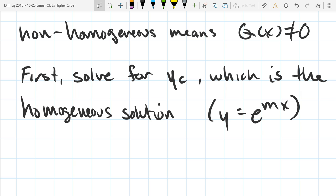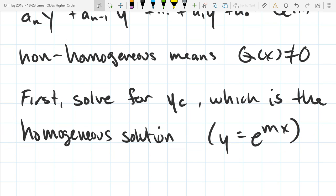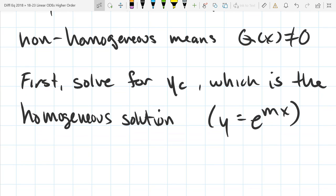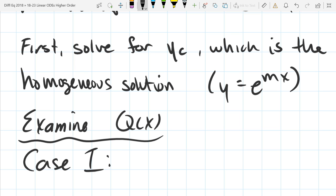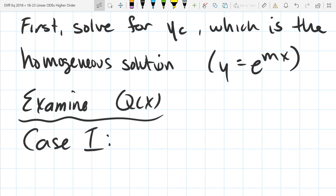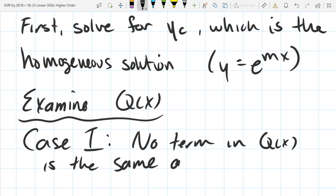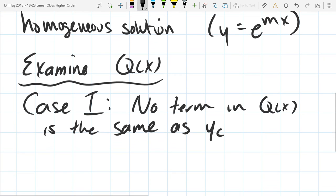Now we're going to focus on when it's non-homogeneous. This is case one. We're examining the Q of X. Case one is no term in QX is the same as a term in YC.